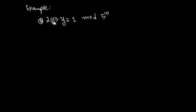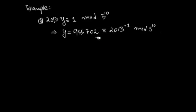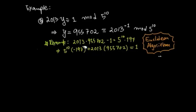Here's an example: if 2013·y ≡ 1 mod 5^10, then by the fundamental theorem for principal ideal domains, such a y exists. I did a computer search — though in a typical number theory course you learn efficient methods to calculate this — and y turns out to be 555,702. That behaves like the multiplicative inverse of 2013 modulo 5^10. This means if you multiply that number by 2013 and subtract 1, the result is 5^10 times 197, so it's divisible by 5^10.